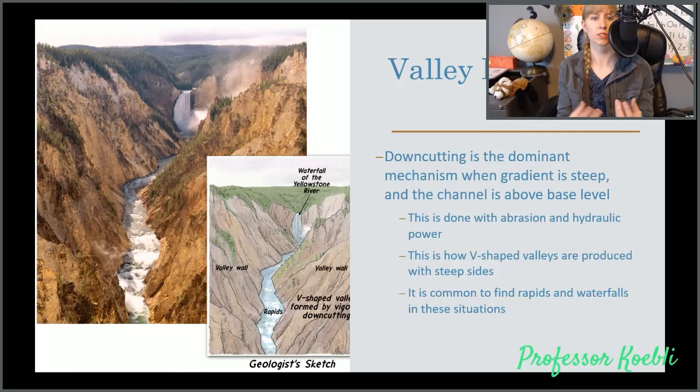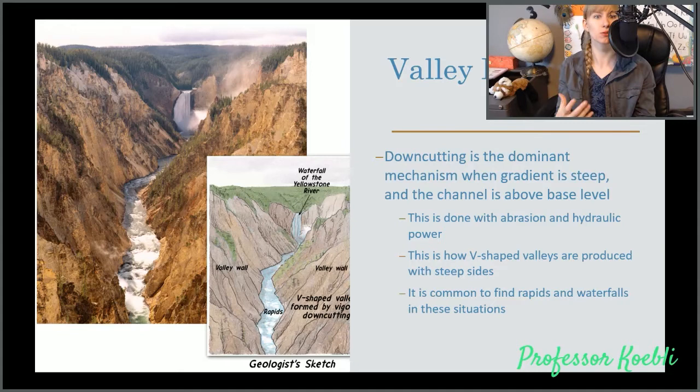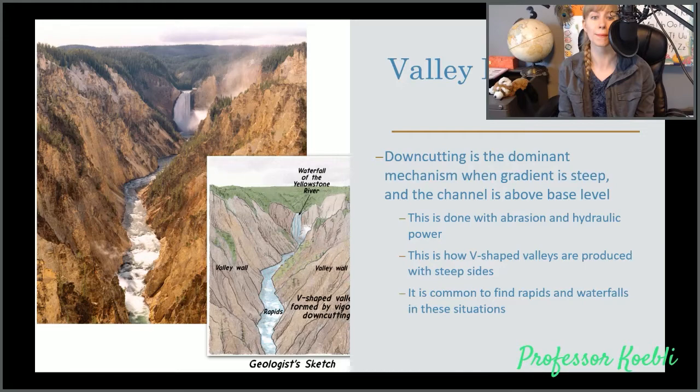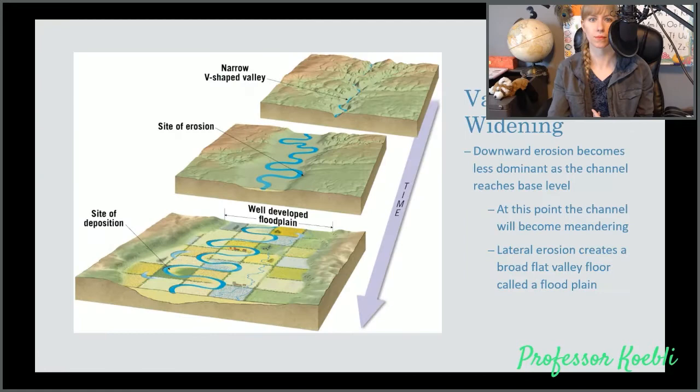When you have a stream that's actively eroding, it's going to have a load and that load ends up turning with hydraulic power into essentially a hydraulic powered sander. This is how V-shaped valleys are produced with steep sides. It is common to find rapids and waterfalls in these situations.